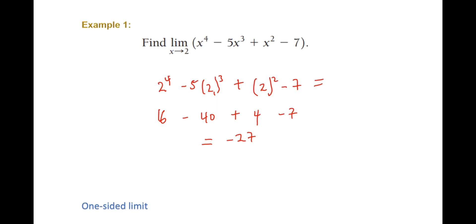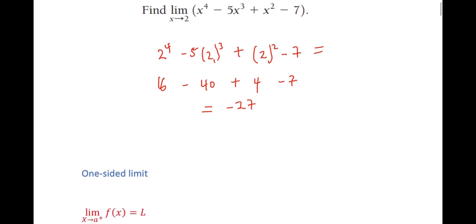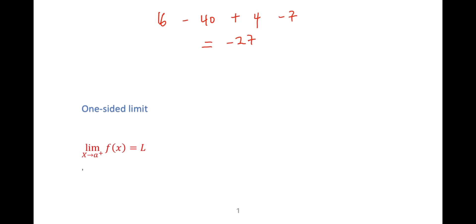So the limit of x^4 minus 5x^3 plus x^2 minus 7x as x approaches 2 gives us negative 27. That brings us to the concept of one-sided limits. Today we are going to build an intuitive approach on one-sided limits, and also talk about continuity, limits to infinity, and some special cases in finding the limit of a function.